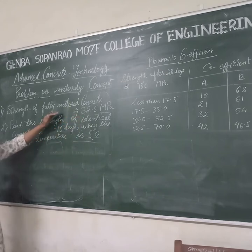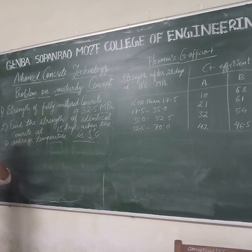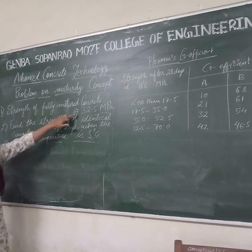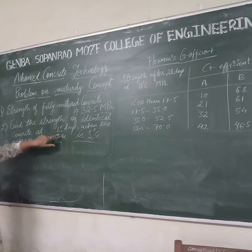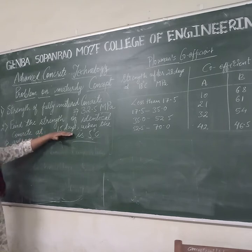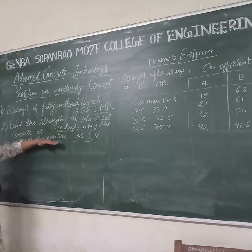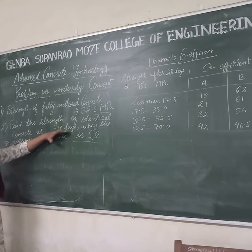The fully matured concrete strength of 32.5 megapascal is the 28-day strength. You have to find the strength at 15 days — that is, how much strength your concrete has developed at the end of 15 days. You have to find this value.